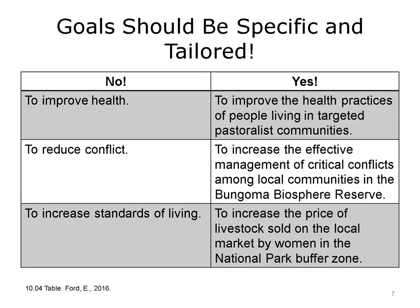Here are some examples of what not to do as well as what to do. 'To improve health' is far too general a statement — we don't know what population it applies to or how we're going to go about it. 'To improve the health practices of people living in targeted pastoral communities' might be something a church group would do; you might want to make it more specific, such as exercise or diet. 'To reduce conflict' is too broad — you might want to talk about conflicts in a particular region of the world.